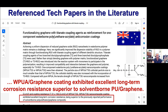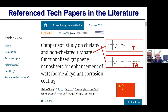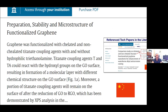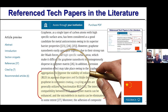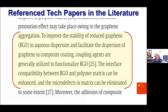The next study was on chelated and non-chelated titanate-functionalized graphene nanosheets in water-based coatings. They saw that to improve the stability of reduced graphene oxide (RGO) in aqueous dispersion and facilitate the dispersion of graphene in composite coatings, coupling agents are generally utilized to functionalize the RGO. The interface compatibility between the RGO and the polymer matrix can be enhanced, and micro-defects in the matrix can be eliminated. China is going like the hammers of hell on this technology.